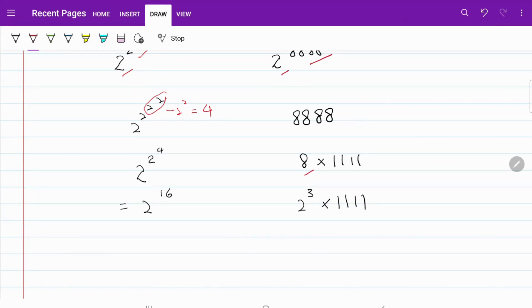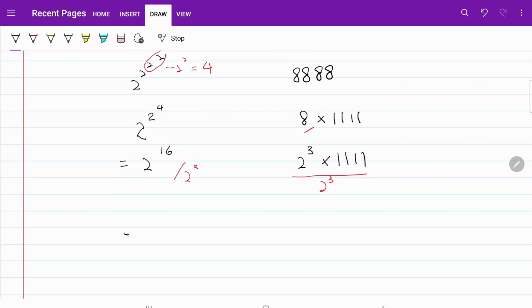The next thing that we're going to do is to try to get rid of 2 cubed on the right-hand side. I can do that by dividing 2 cubed on both sides. If I do that, then on the left-hand side, I can use the rule of exponents and turn this into 2 to the power of 16 minus 3, which is equal to 2 to the power of 13.